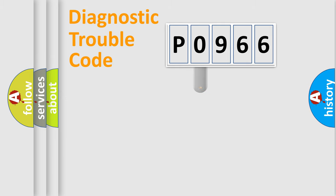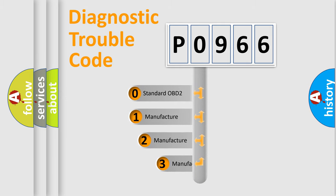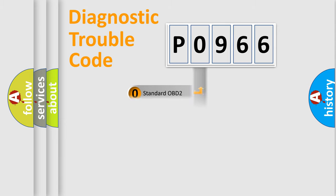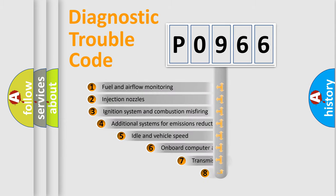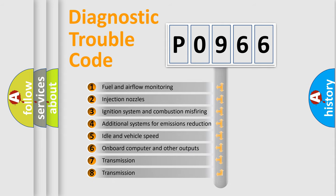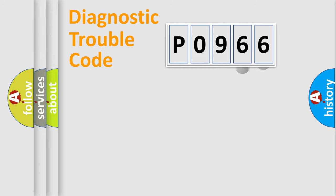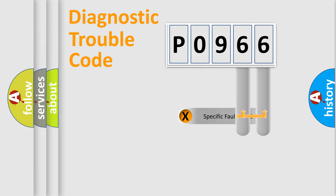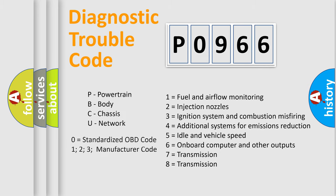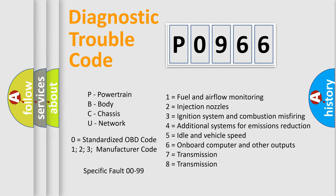This distribution is defined in the first character of the code. If the second character is expressed as zero, it is a standardized error. In the case of numbers 1, 2, or 3, it is a more manufacturer-specific expression of a car-specific error. The third character specifies a subset of errors. Only the last two characters define the specific fault of the group. This division is valid only if the second character code is expressed by the number zero.